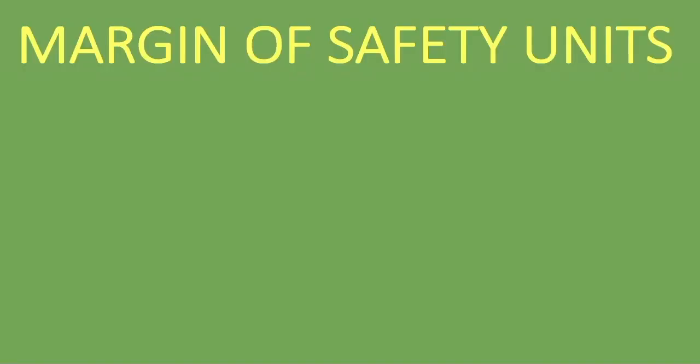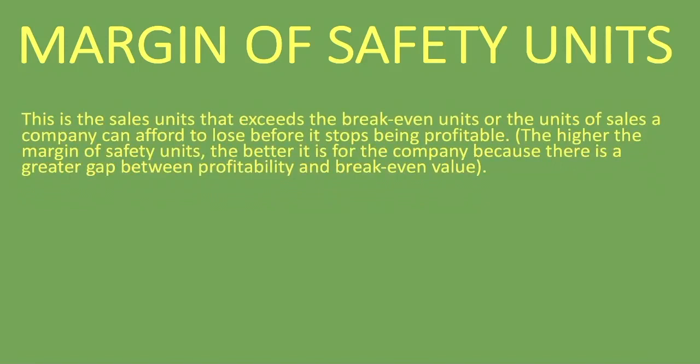Welcome to this lesson. I'm going to be looking at the margin of safety units. In our previous lessons we looked at the margin of safety percentage as well as the margin of safety value. The margin of safety units is the sales units that exceeds the break-even units, or the units of sales a company can afford to lose before it stops being profitable. The higher the margin of safety units, the better it is for the company.